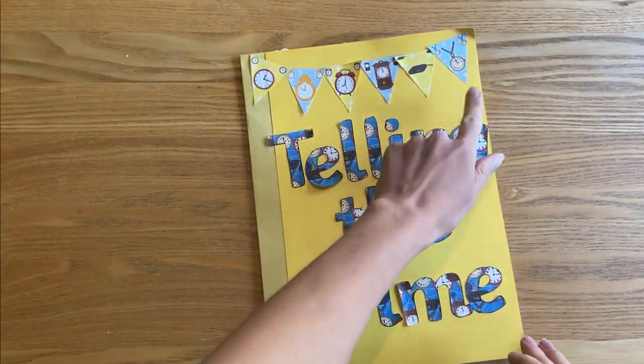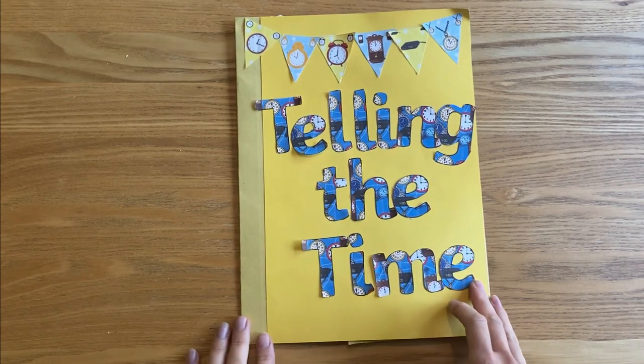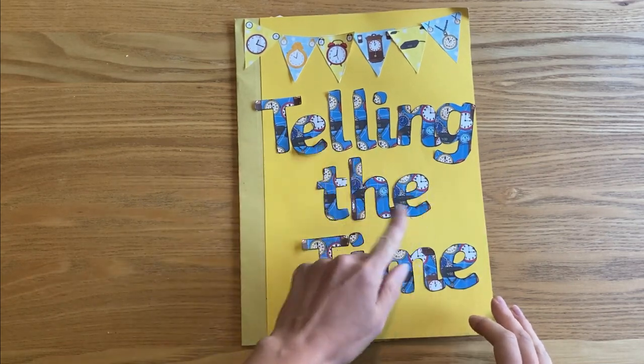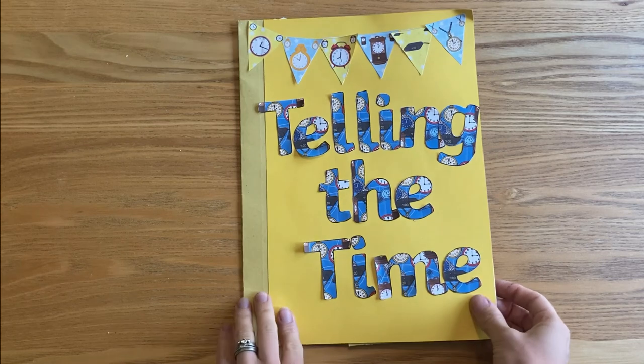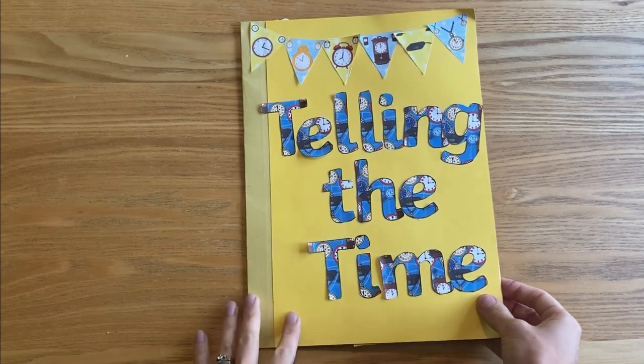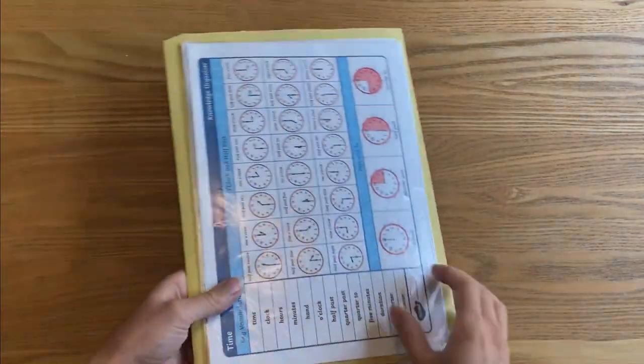On the front we've got some nice bunting with different types of clocks on and some lettering to write in telling the time, so it looks really pretty on the front.